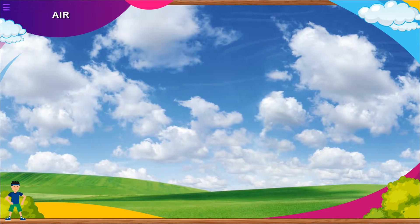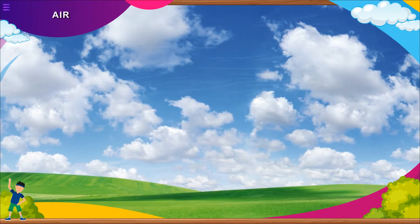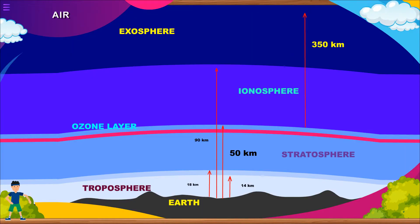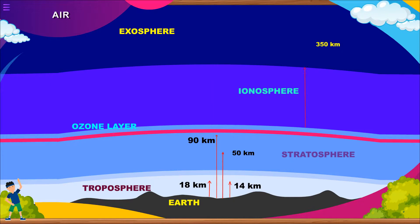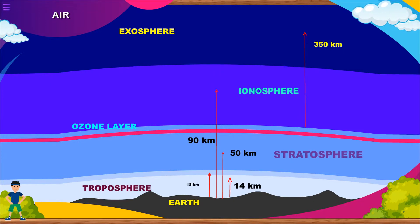Plant, human and animal life would not be possible without air. Our earth is surrounded by a layer of air called the atmosphere. The atmosphere is divided into various layers: troposphere, stratosphere, ionosphere and exosphere.